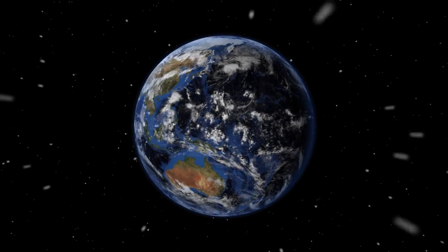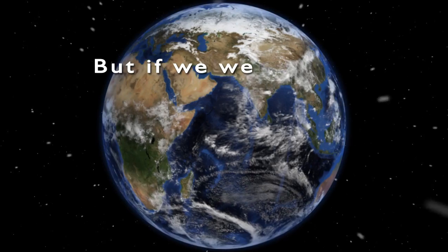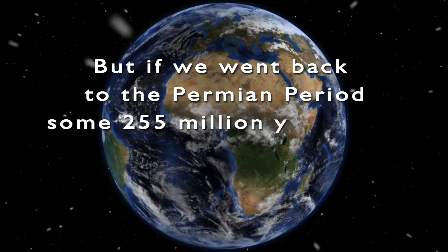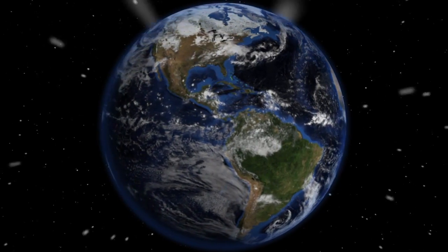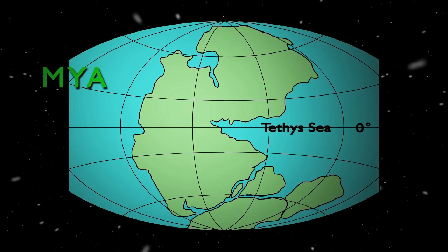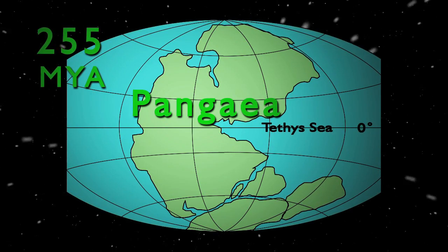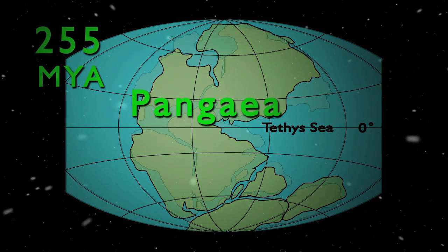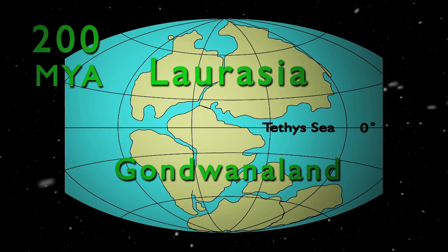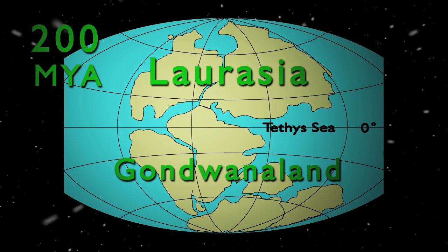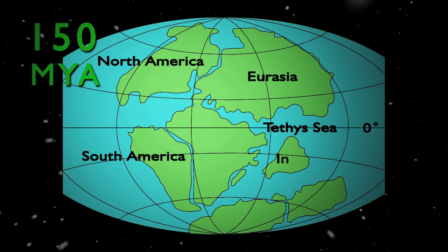Everyone is familiar with the look and appearance of our Earth today from maps, globes, and photos of our planet from space. But if we went back to the Permian period some 255 million years ago we would find a very alien-looking Earth. All of the continental masses that exist today were grouped together into a supercontinent which we now call Pangaea. Slowly over the eons, plate tectonics and continental drift reshaped our world. By 200 million years in the past, Pangaea had broken up into two continental groups which geologists call Laurasia and Gondwanaland. By the 150 million year mark we would see land masses that could be recognized as precursors to the continents we know today.